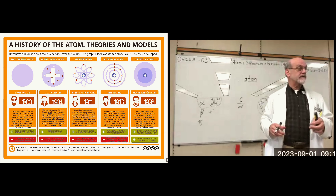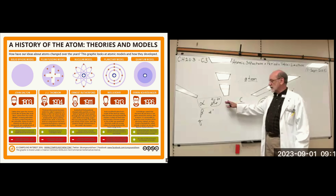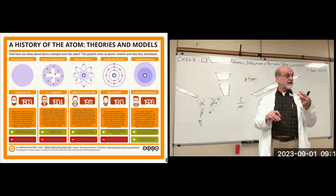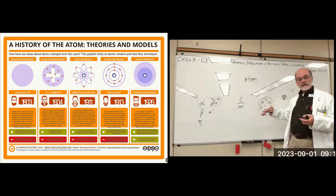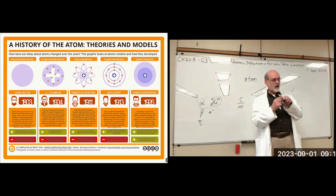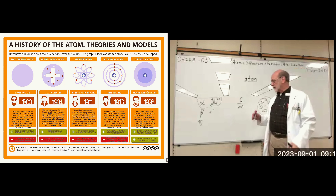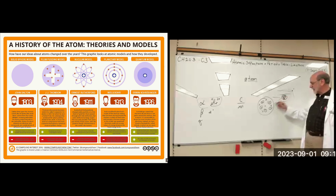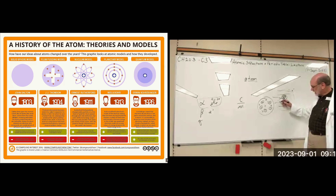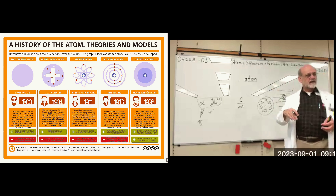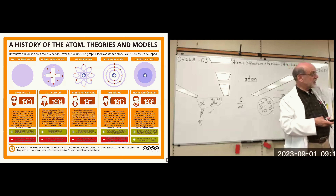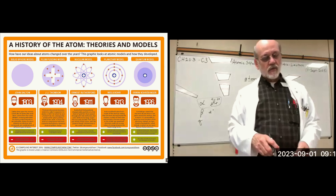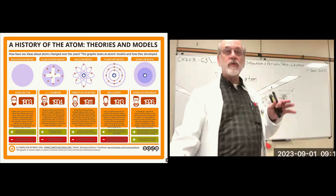Rutherford thought: if I fire those alpha particles at a very thin target — just a couple of atoms thick — then if the plum pudding model is correct, the alpha particles will fly straight through without being stopped and form a nice little dot on the other side. But if his nuclear model is correct, most will go through the empty space, some will bounce back, some will be deflected. So you'll get a pattern with most in a bright central dot but others scattered. Rutherford conducted his experiment, proved his model, and the plum pudding model was dead.